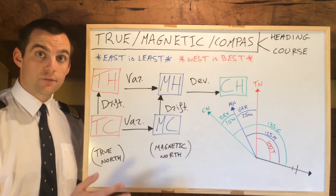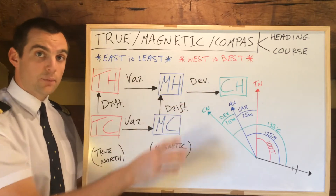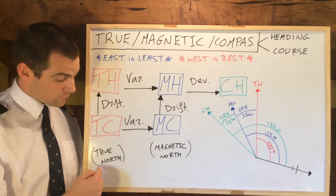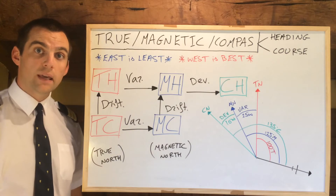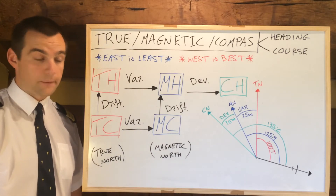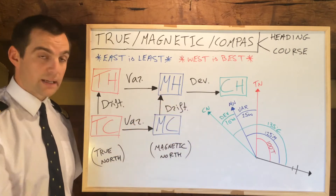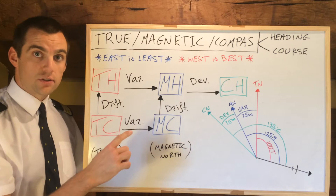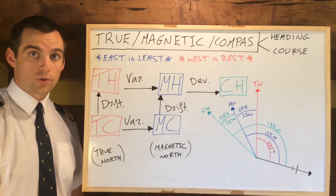Once we've taken care of drift, we're up on the top line only dealing with headings. True heading relates to true north, and is normally what we get from any chart, which is lined up with true north. A magnetic heading, on the other hand, is related to magnetic north. To calculate that, we need to know the variation, which is the difference between magnetic north and true north.